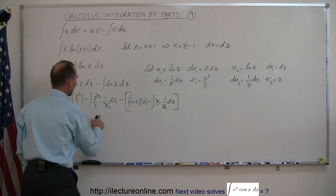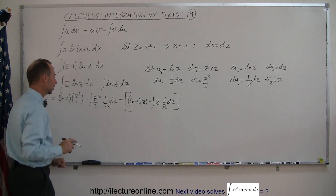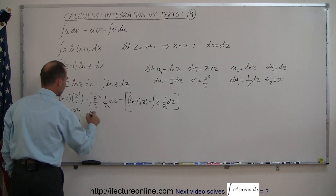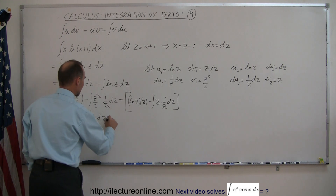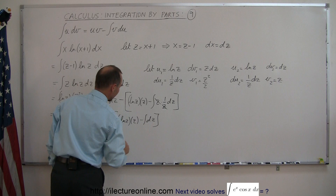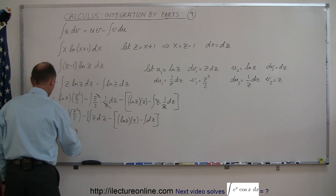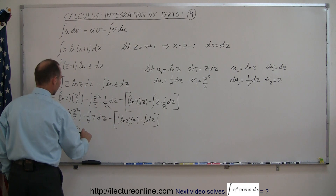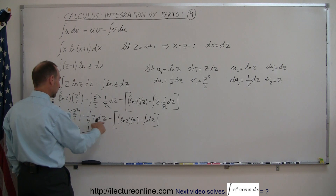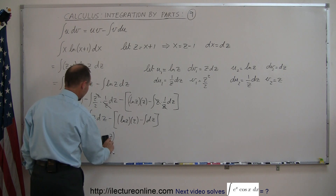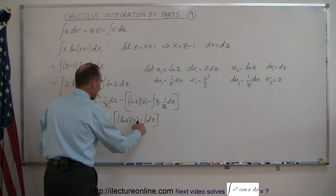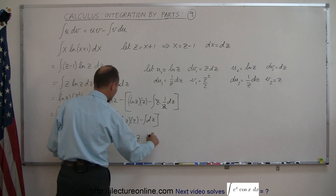Cleaning it up: this equals the natural log of z times z squared over 2, minus 1 half times z squared over 2, minus the natural log of z times z, and then the minus times the minus becomes plus, so plus the integral of dz which is z, plus the constant of integration.